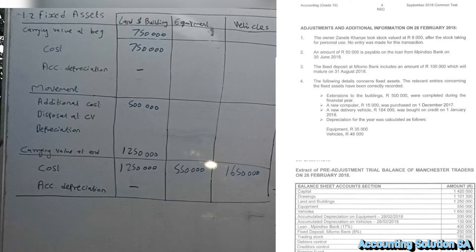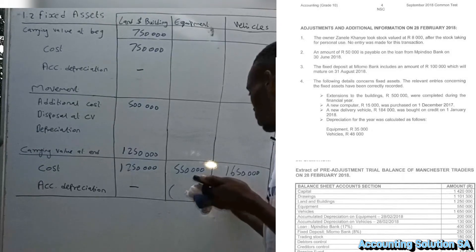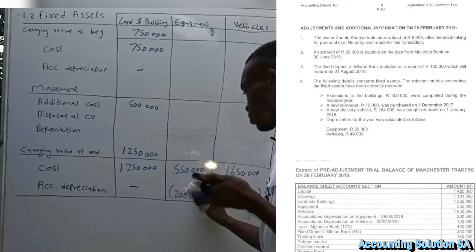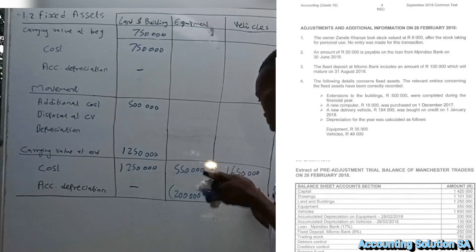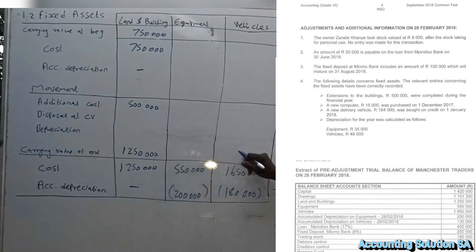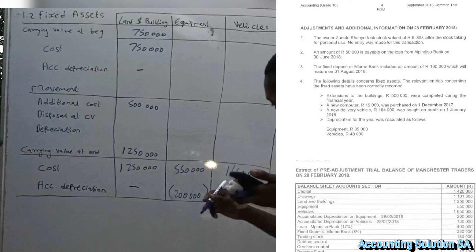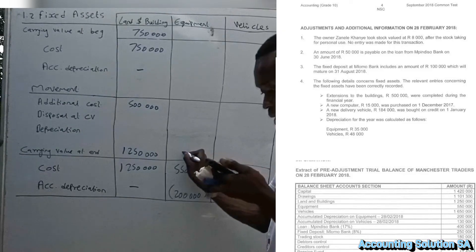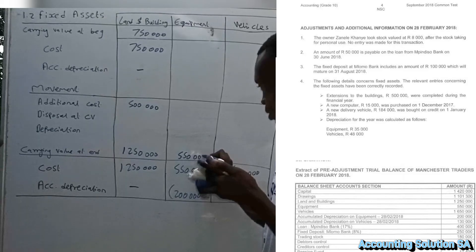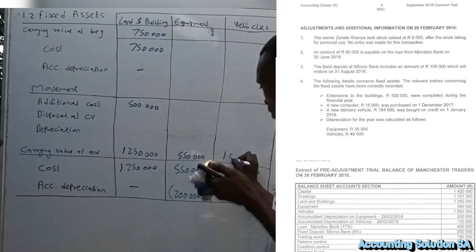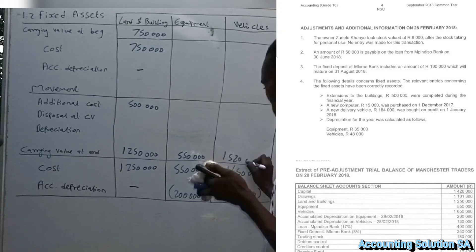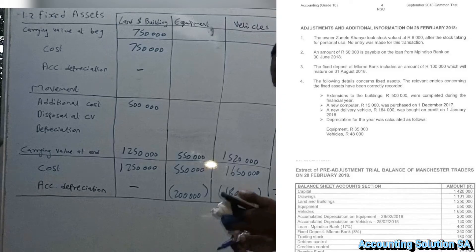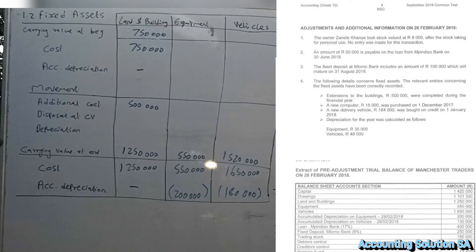Let's check the accumulated depreciation amounts. The accumulated depreciation for the year end was given: it's 200 000 for equipment and 180 000 for vehicles, as shown in the answer book. This means we can now calculate the opening figures. The carrying value for equipment is 550 000 minus 200 000, which gives 350 000, and for vehicles it gives 1 520 000.